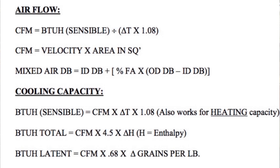If you go into a job measuring enthalpy in and out across a coil and the delta H is higher than 6.67 — say 7.5 or 8 — you could have a low airflow situation. You'd then measure CFM and it might come out at 350 or 325 CFM per ton, and you can make adjustments if possible. Similarly, a relative humidity in the comfort zone of 50–55% should correspond to a sensible temperature split of 18–20°F across the coil. If it hits 22–23°F, there's likely an airflow issue.